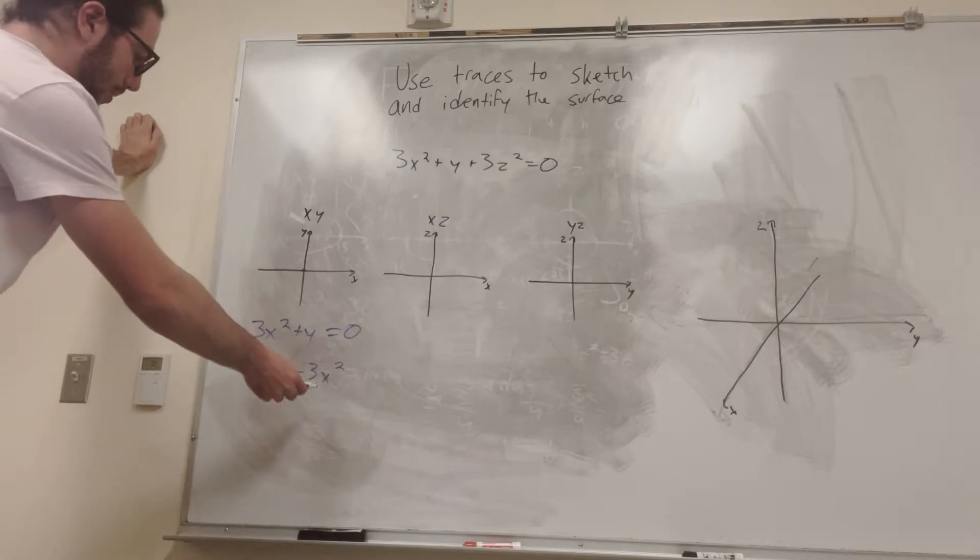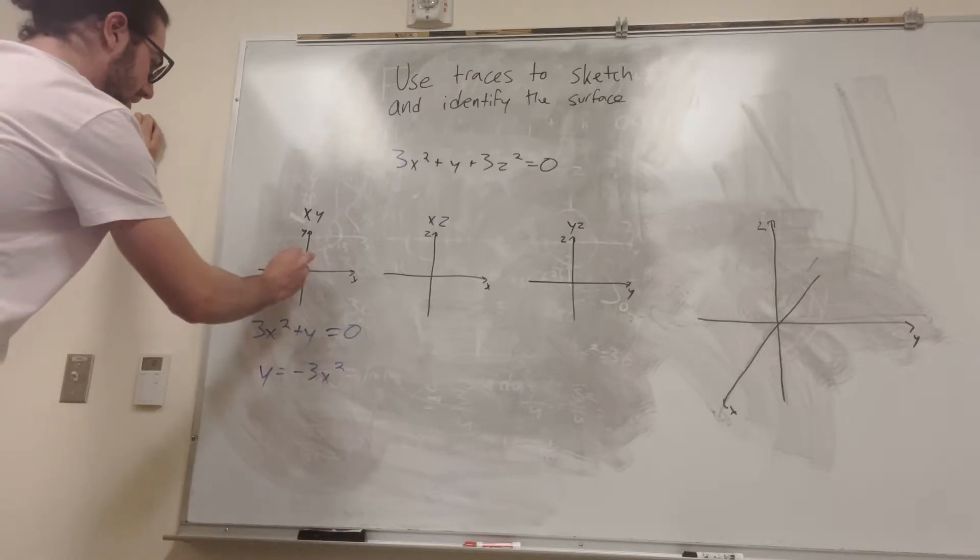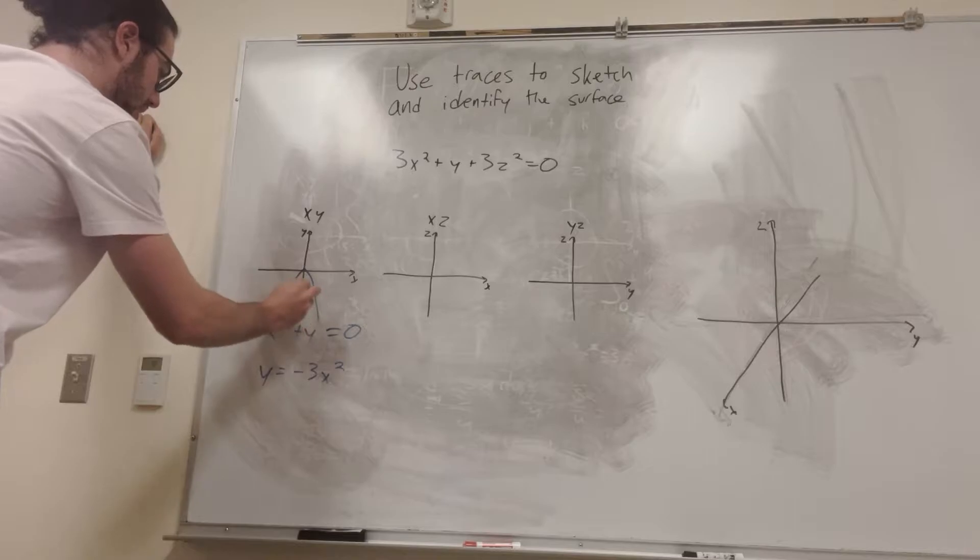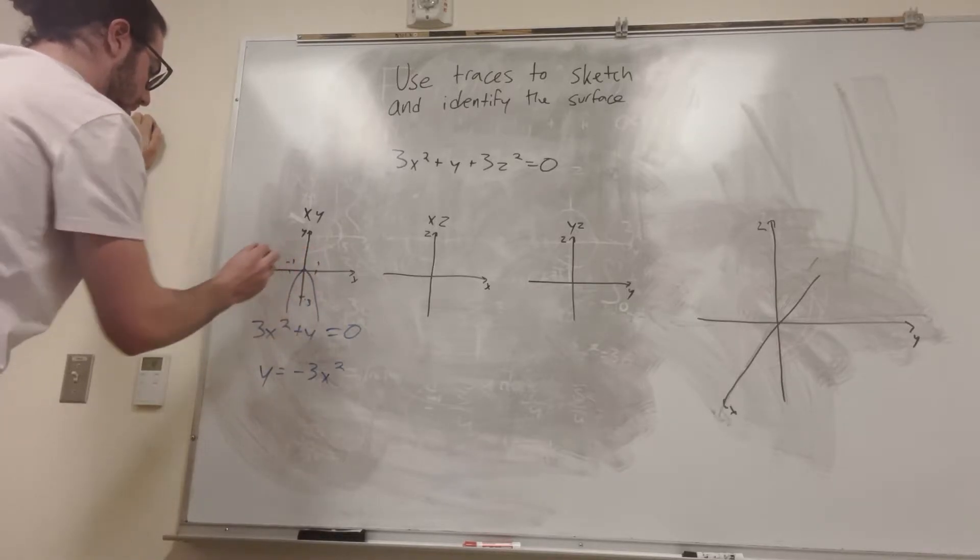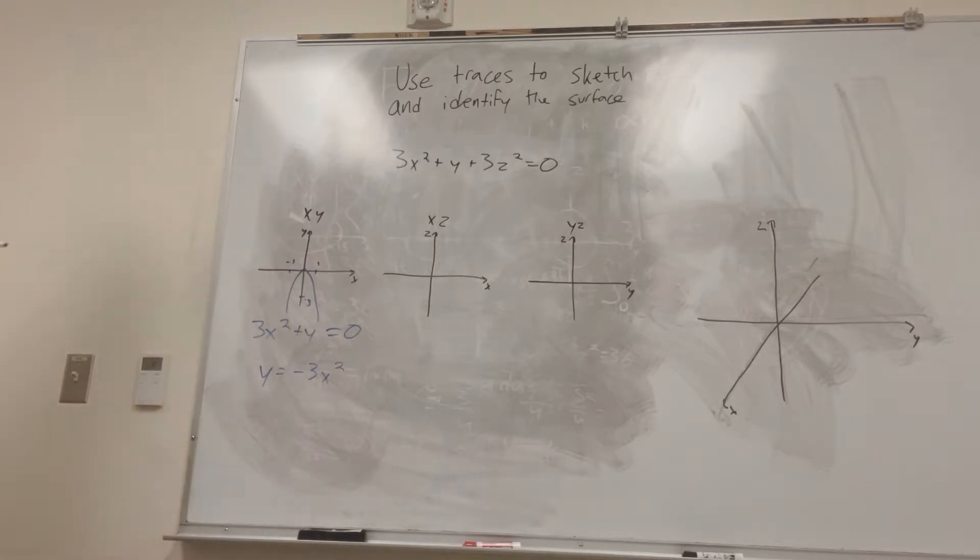So when x is equal to 1, y is going to be equal to negative 3. So it's going to be a very steep parabola, like so. Alright, so this is like negative 3, and this is 1, and this is negative 1. Alright, so that's how you draw these kind of things.